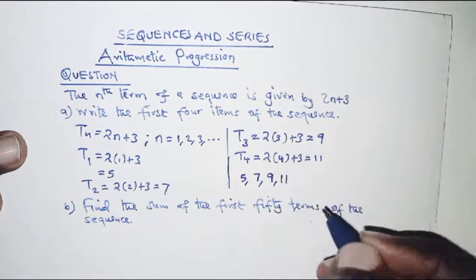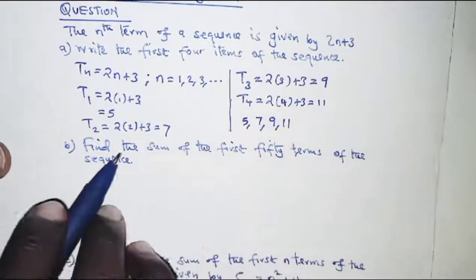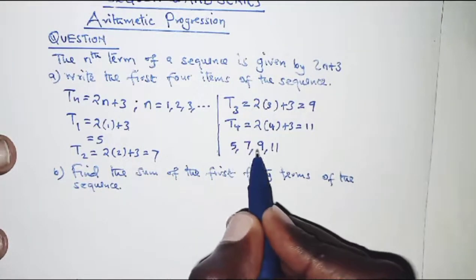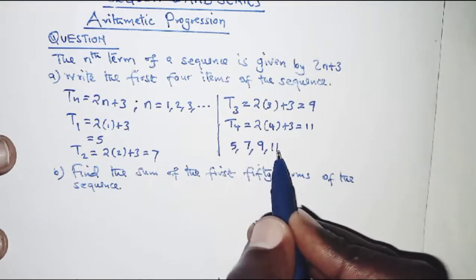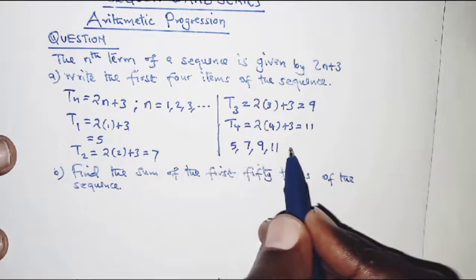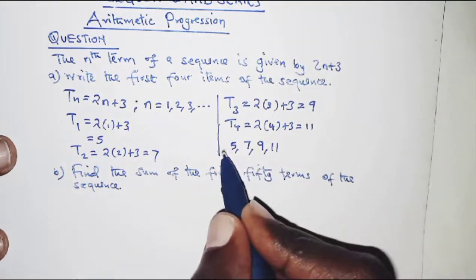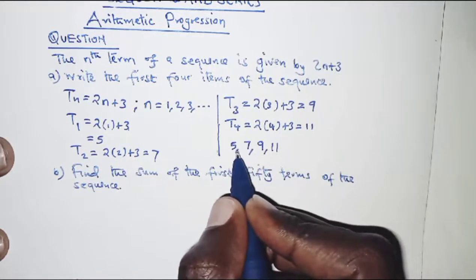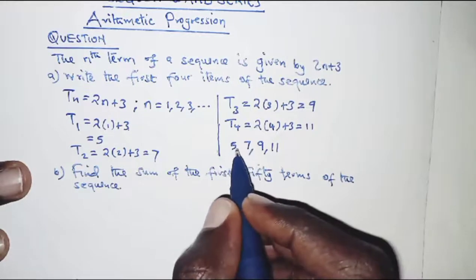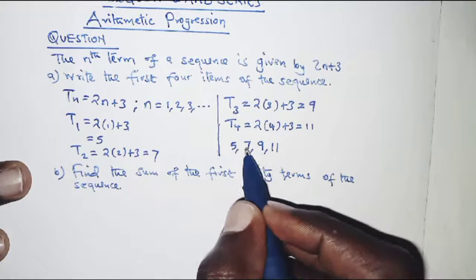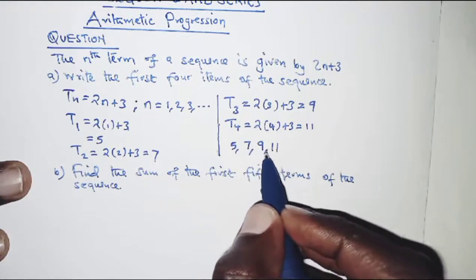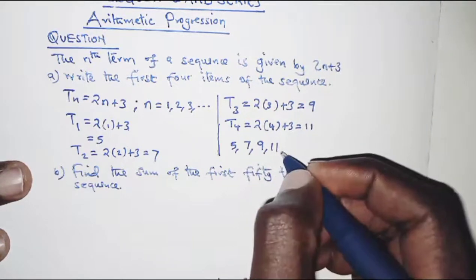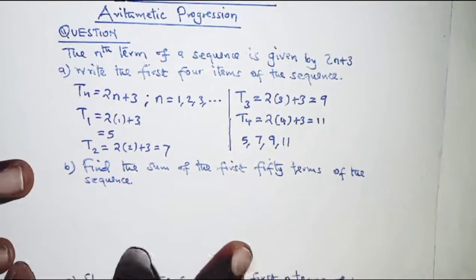For part b, we need to find the sum of the first 50 terms. From the sequence we have a pattern, and we need to determine whether it's an arithmetic or geometric sequence. Arithmetic sequences are characterized by a common difference; geometric sequences by a common ratio. We find that 7 minus 5 is 2, 9 minus 7 is 2, and 11 minus 9 is 2, so there is a common difference of 2, making this an arithmetic sequence.